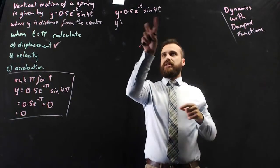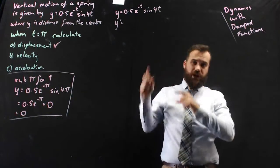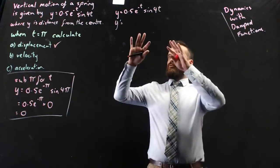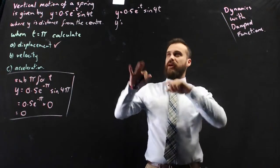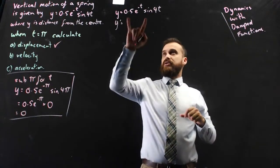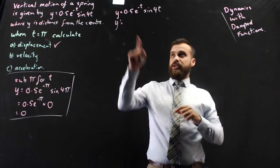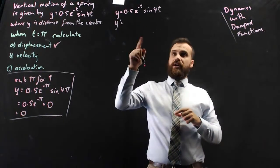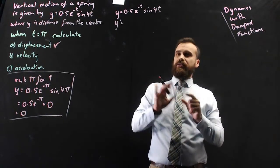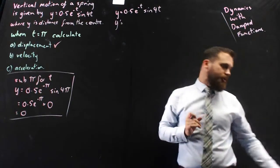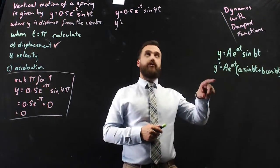You can see the sine 4t in here which ends up being like a chain rule. Really, really difficult. Now we can jump through all the hoops and do the product rule. You might want to pause it here and do the product rule yourself, but there is a sneaky little formula that we can learn for this.